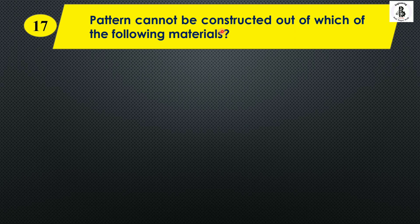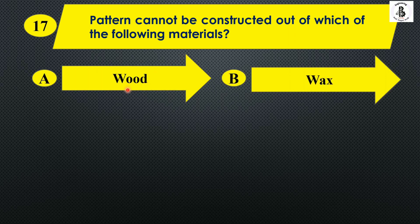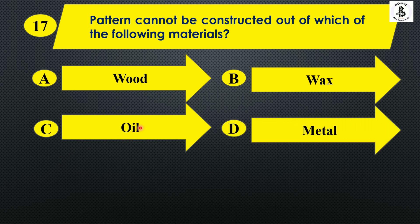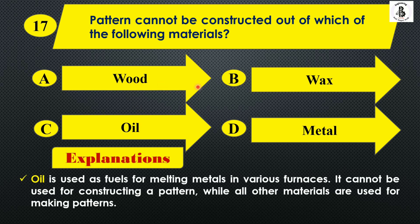Pattern cannot be constructed out of which of the following materials? Option A: wood, Option B: wax, Option C: oil, and Option D: metal. Wood, wax, metal, and plaster of Paris are all types of pattern materials used in making sand casting products. However, oil is not used as a pattern material — it is used as a fuel for melting metals in furnaces and cannot be used for constructing a pattern. So the right answer is Option C, oil.